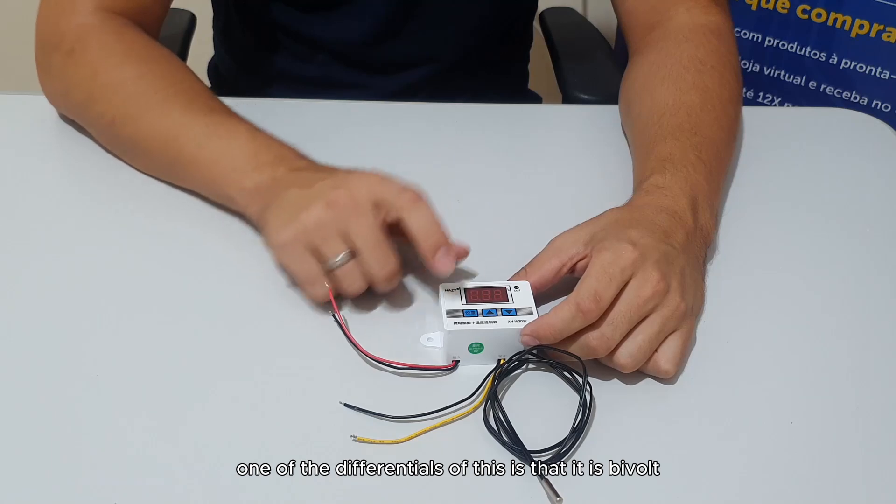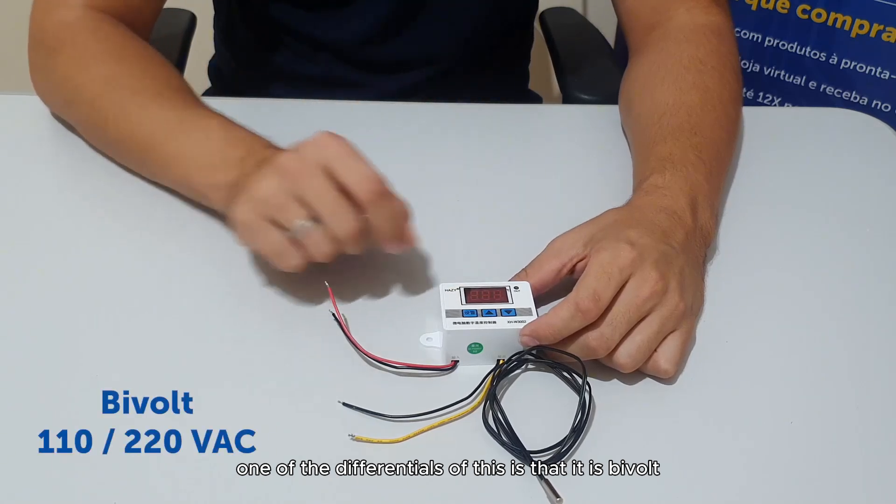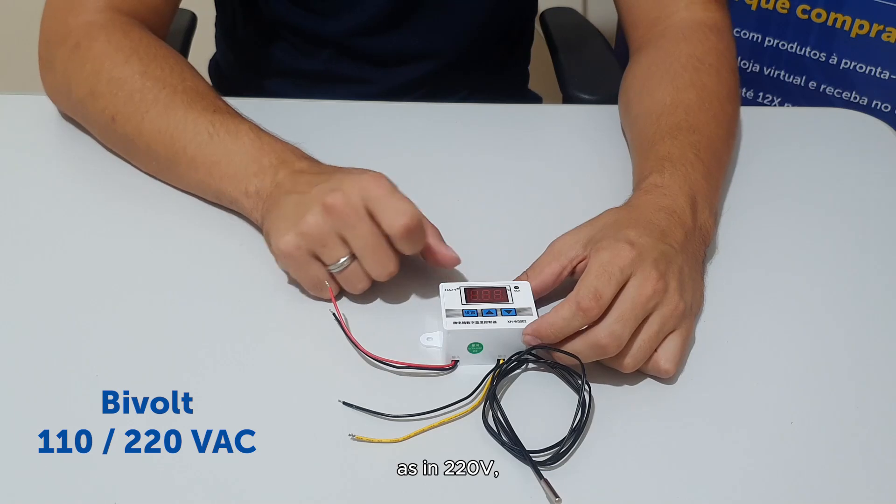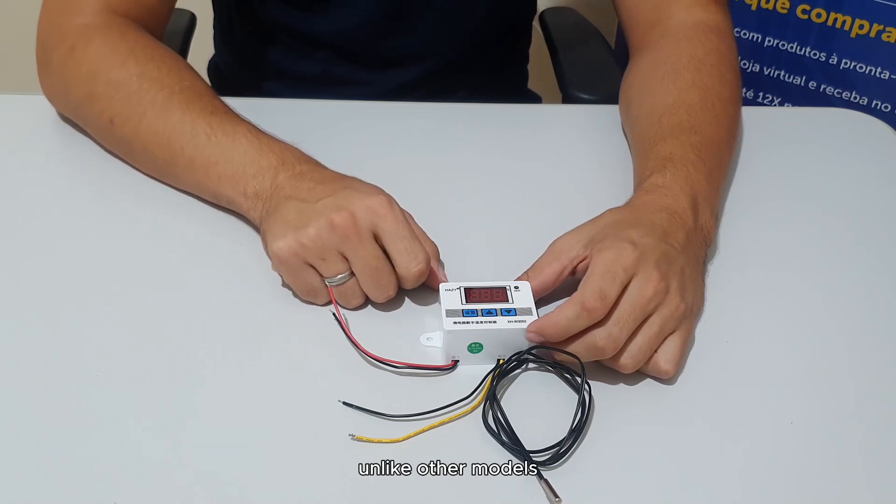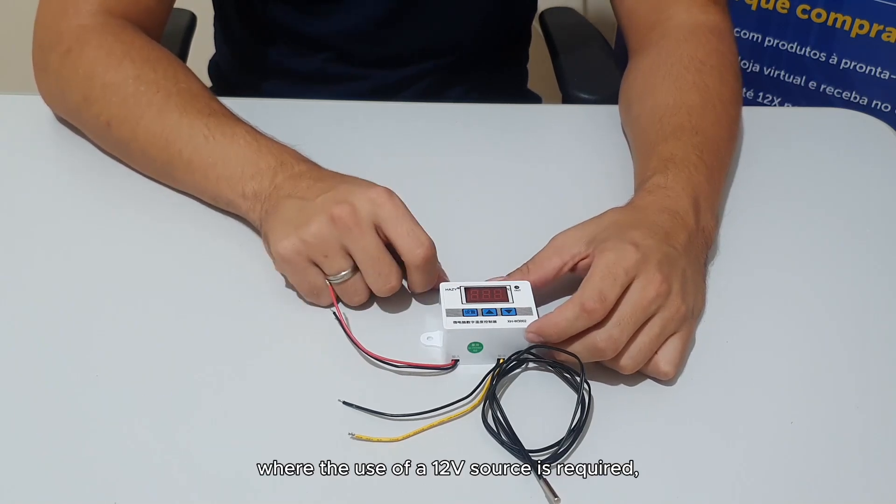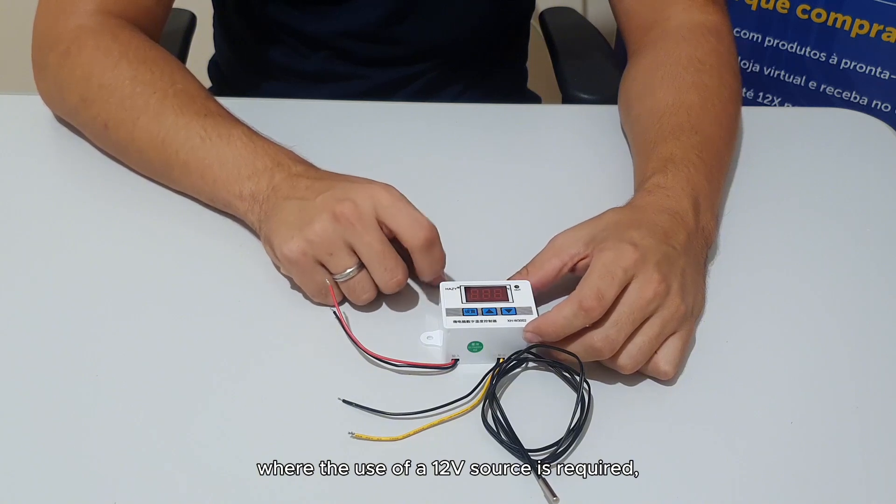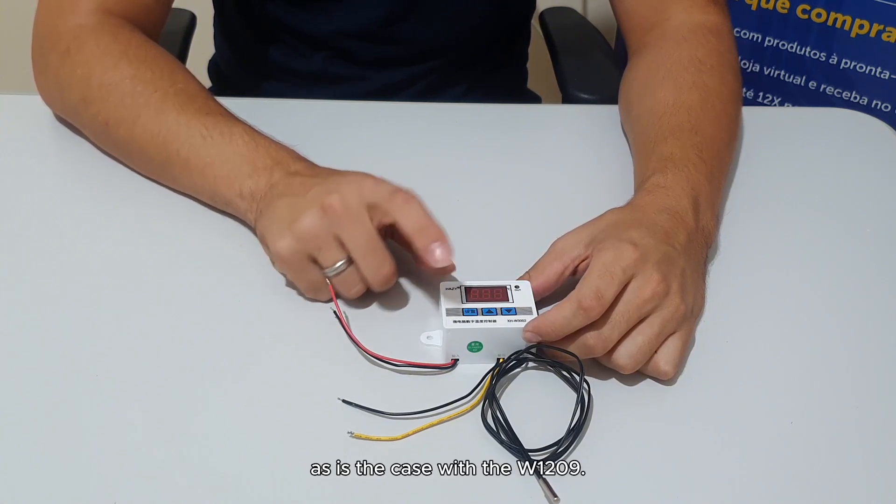One of the differentials of this is that it is bivolt. It can be turned on both 110 volts and 220 volts. Unlike other models where the use of a 12 volt source is required as is the case with the W1209.